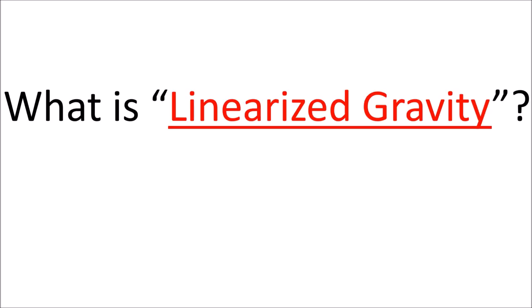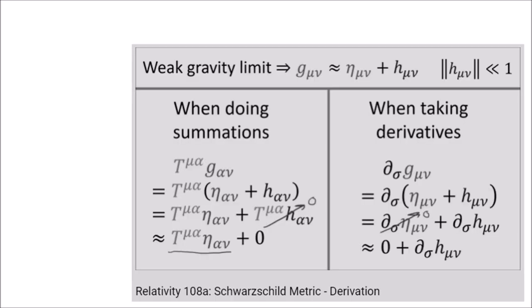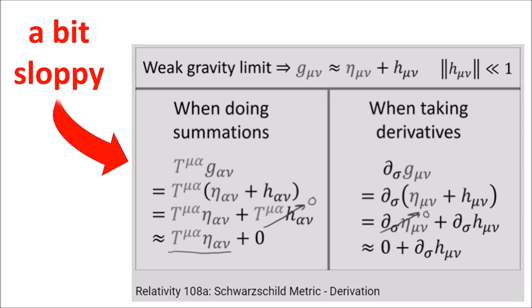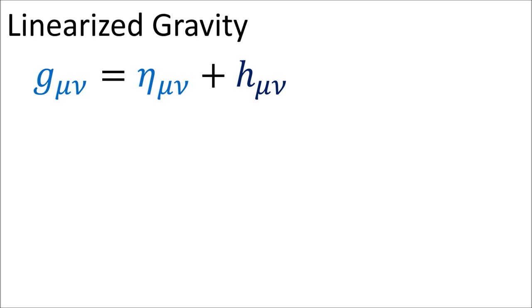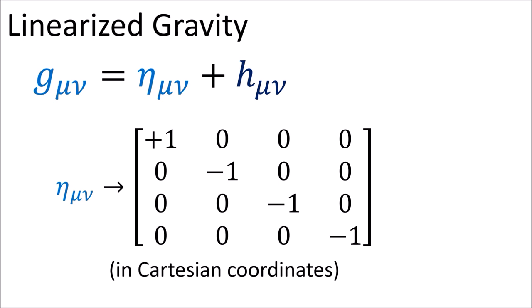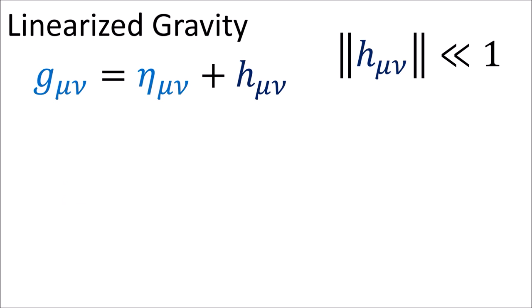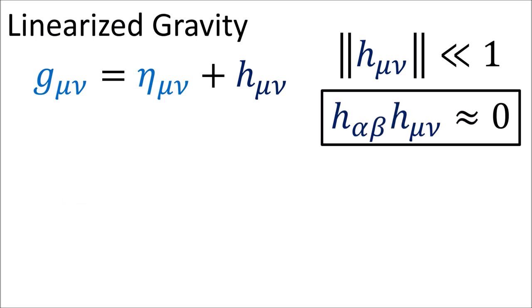Before we start, I want to go over exactly what we mean by linearized gravity, also called weak gravity. For linearized gravity, we write the metric g as the flat Minkowski metric eta in Cartesian coordinates plus a small change h. When I say h is small, I mean that any term involving h squared is so extremely small that it can be neglected and set to zero.